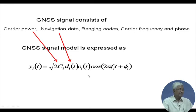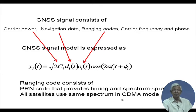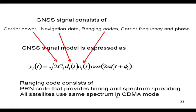The ranging code c_i(t) consists of a PRN code unique to each satellite, so satellites are identified by their PRN code rather than satellite number. This provides timing and spectrum spreading. All satellites use CDMA mode of communication — GLONASS had FDMA but is changing over to CDMA. Almost all satellite navigation systems now use CDMA. The ranging code serves the dual purpose of overlapping over the same bandwidth and providing unique satellite identification, time marking, and the carrier frequency f_i and phase phi_i.